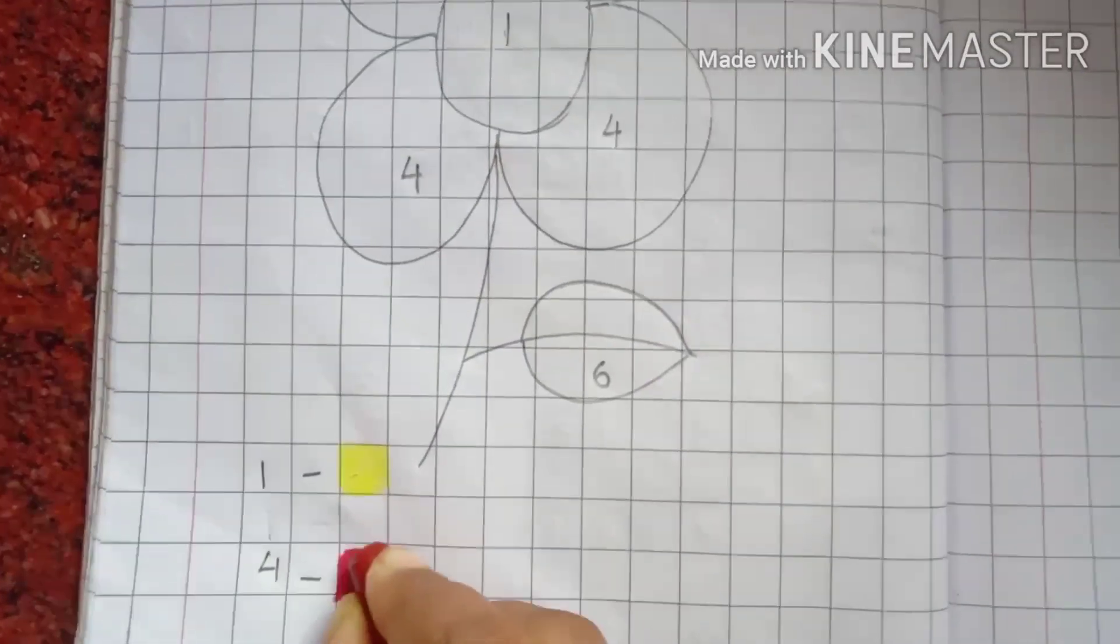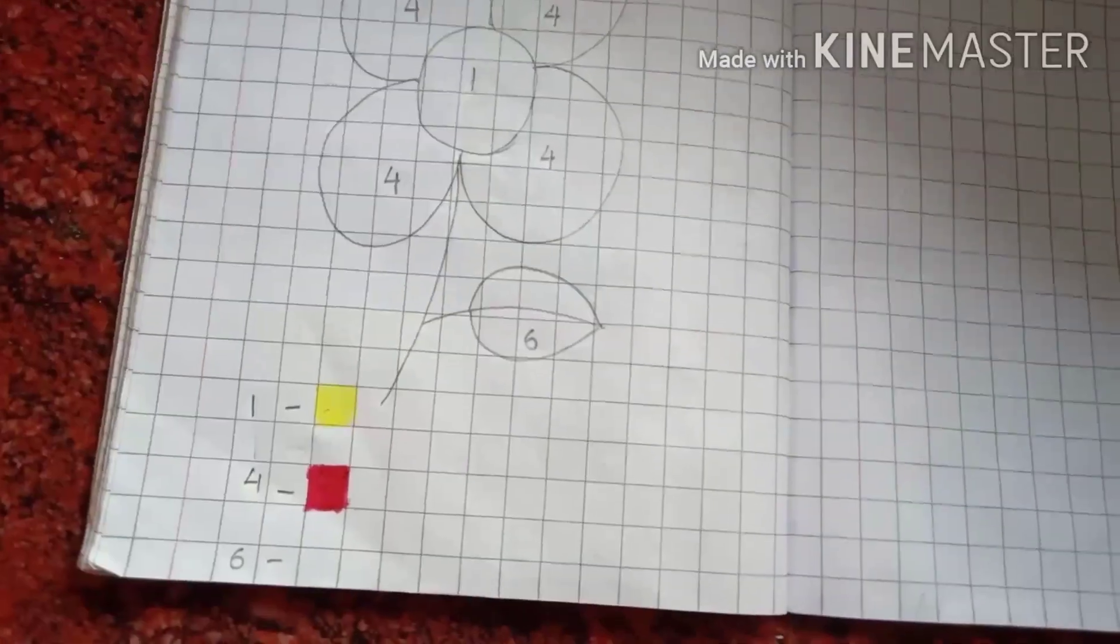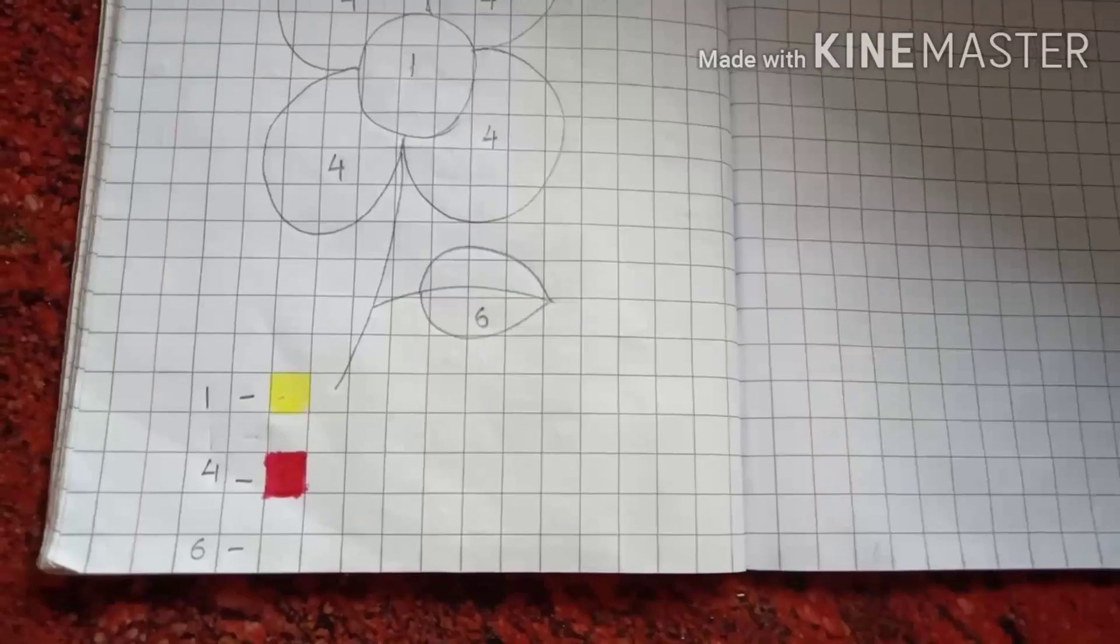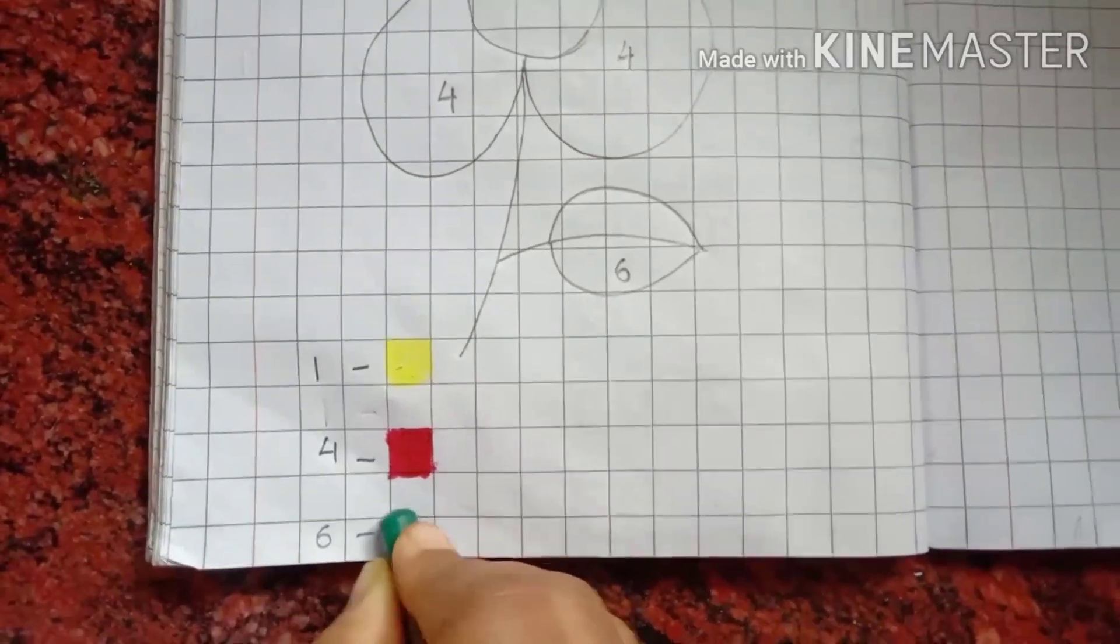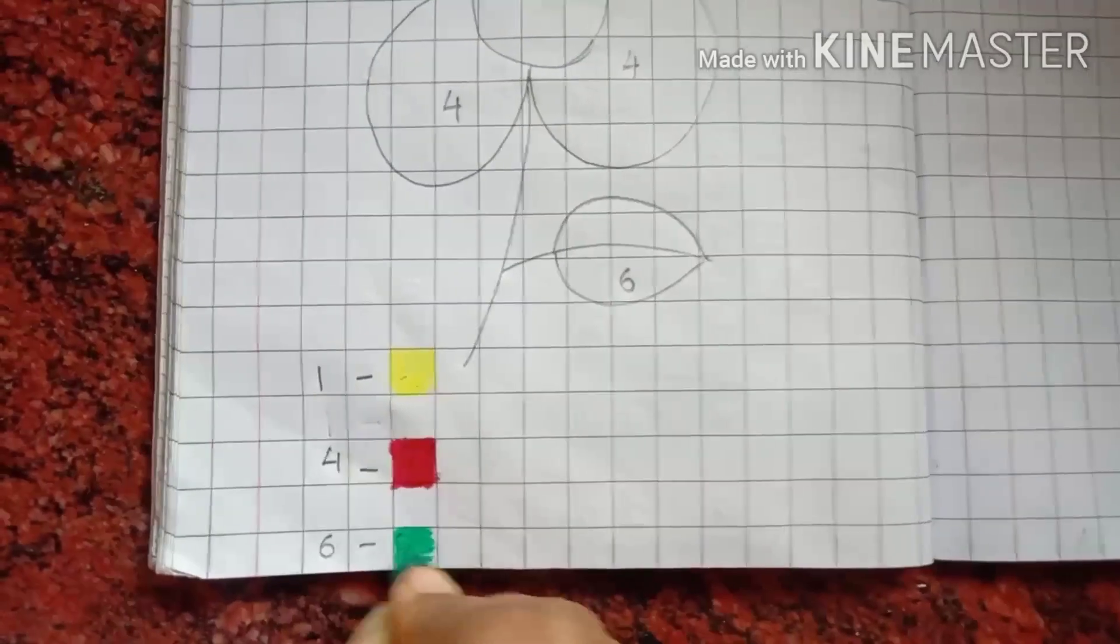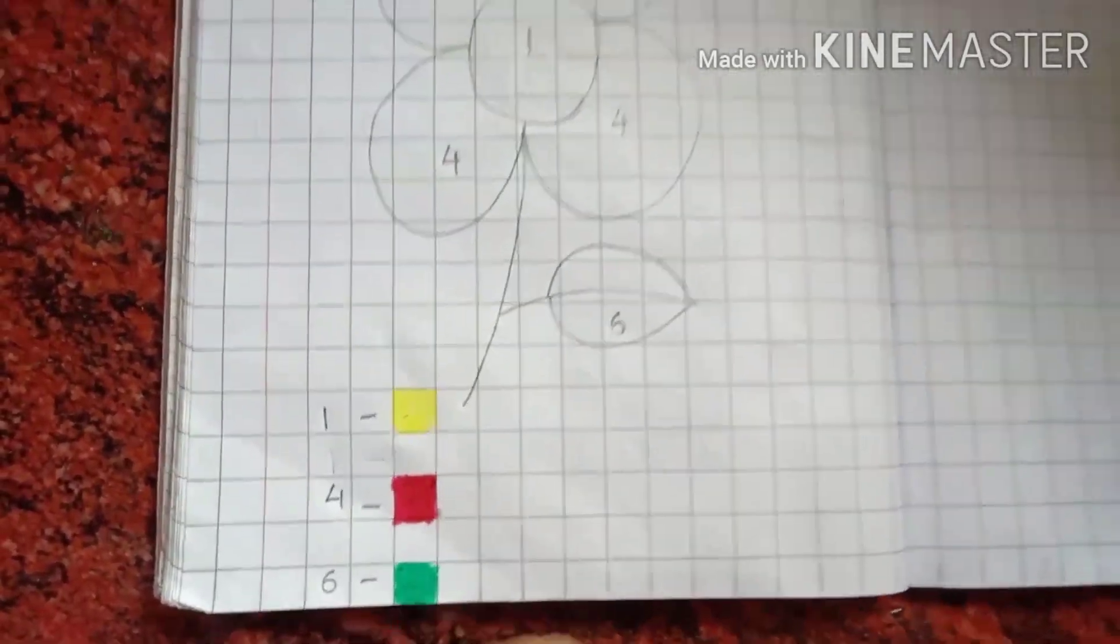Now, 4, I have given red color. The color of 4 here is red. And, 6, I will give green color. Number 6, I will give green color.